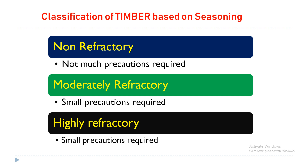Moderately refractory timbers are timbers which require small precautions, otherwise the timber gets cracked. For example, mango tree, teak, rosewood, sissoo, etc. The third type is highly refractory timber.